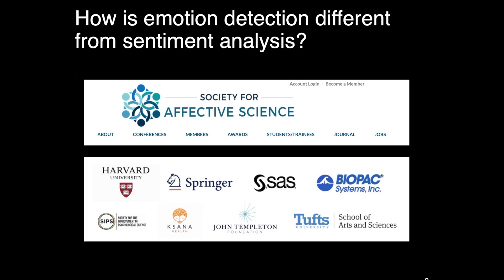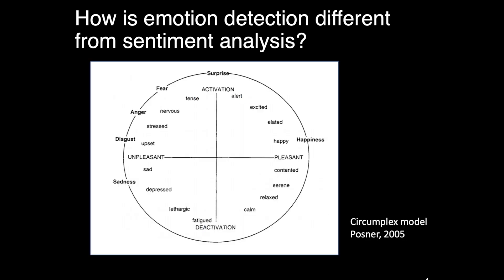Moving on to the first question, how is emotion detection different from sentiment analysis? To give you some background, I was at the Society for Affective Science earlier this year. It is a conference where academic researchers who study emotions get together and share their latest findings. At this conference, researchers repeatedly brought up a popular and revered framework called the circumplex model, which is developed by Posner.